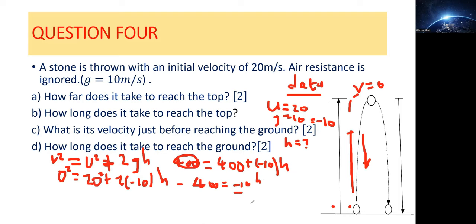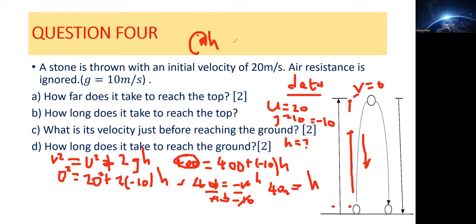We now need to get rid of negative 20 by dividing both sides of the equation. Those cancel, and we're going to have h equals — negative and negative cancel, so we're left with 40. So height equals 40 meters. The distance covered from where it was thrown going upwards until it reached the apex of the journey was 40 meters.